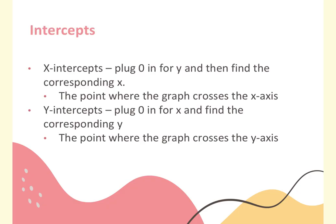Your quiz will not require the graphing calculator this week. Intercepts are where the graph crosses the axes. X-intercepts occur when you plug zero in for y; y-intercepts occur when you plug zero in for x. Intercepts are always written in coordinate point form — the x-intercept is (number, 0) and the y-intercept is (0, number).